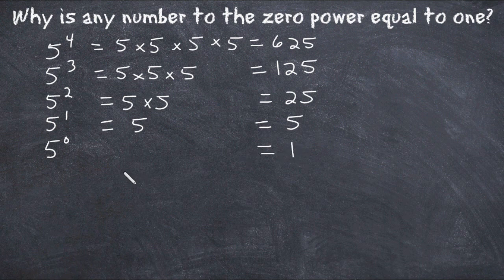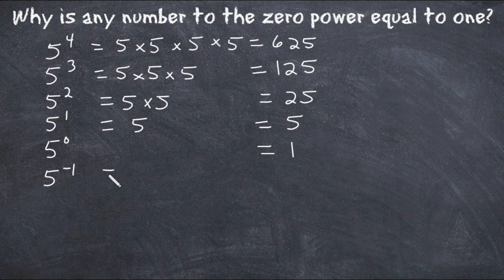Now this pattern continues even if we go one power smaller. So we're going to write five to the negative first power. What we're going to do now is take the previous power, which is five to the zero power equal to one, and divide that by five. And one divided by five is one fifth, which we can just leave in its fractional form.